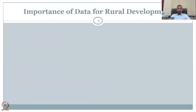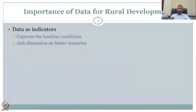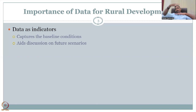Let's look at the importance of data for rural development. There is a tremendous need for rural development in India, and data can support decision-making. The first thing is data as indicators. The data you capture will assess the baseline condition — the stage at which you start or keep as an average. Only when you know the current status can you build on top of it, and that is where data need is very high.